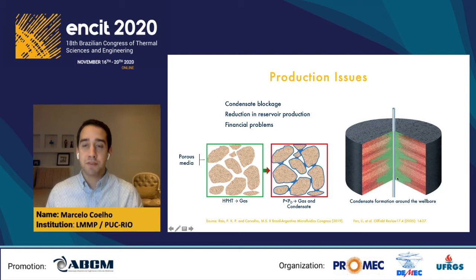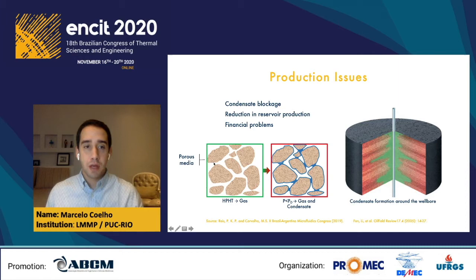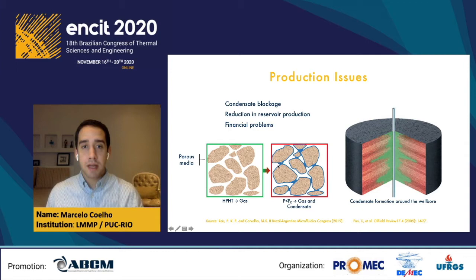Here we have two images to better understand this phenomenon. In the first one, we have conditions of high pressure and high temperature — the gas is in the white part and the rock matrix surrounds it. We can see that the gas can flow in the reservoir with no problem. But if we decrease the pressure, we produce some condensate shown here in blue, and we can see that the condensate accumulates and blocks the gas path, so now the gas is going to have trouble flowing through the reservoir.